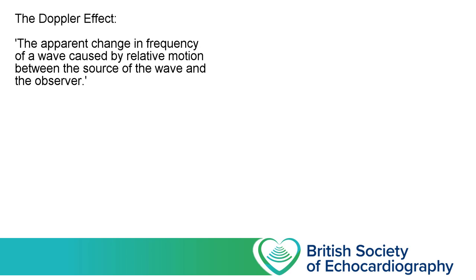What we want to achieve is a visualisation of the direction and velocity of the blood flow as it moves through the heart, and we're going to use the Doppler effect in order to do this. The Doppler effect states that if the source of the wave is moving relative to the observer, then the frequency of the wave will shift depending on whether the source of the wave is moving towards or away from the observer. Let's get a sense of how that works in practice.